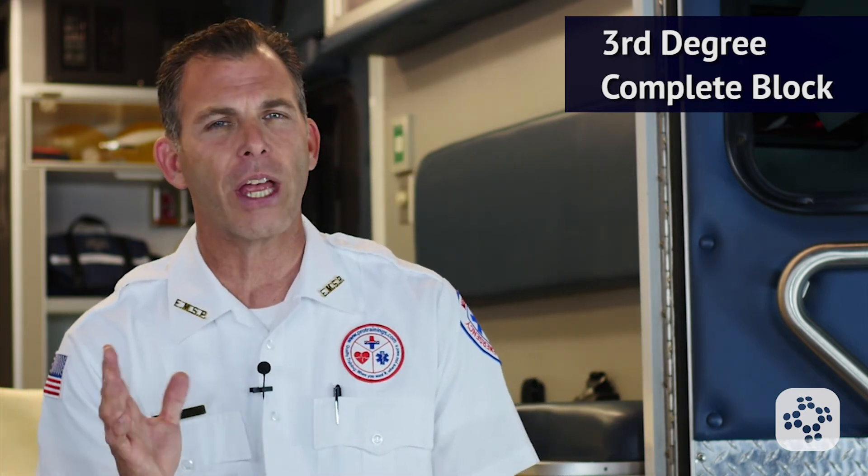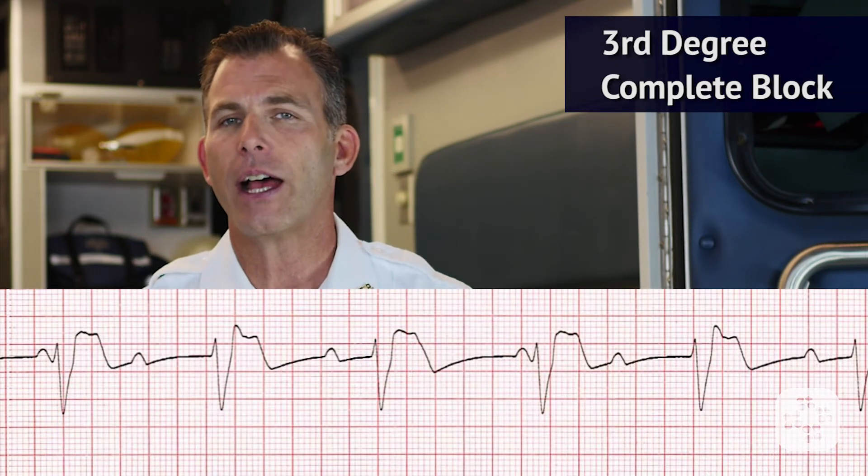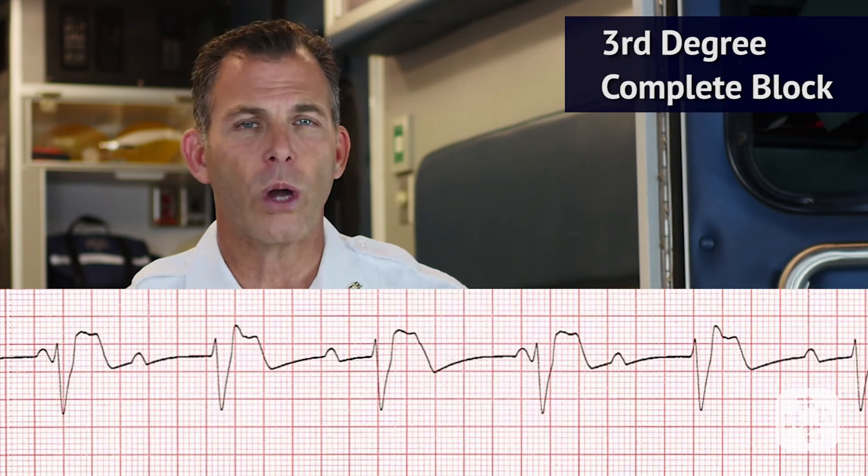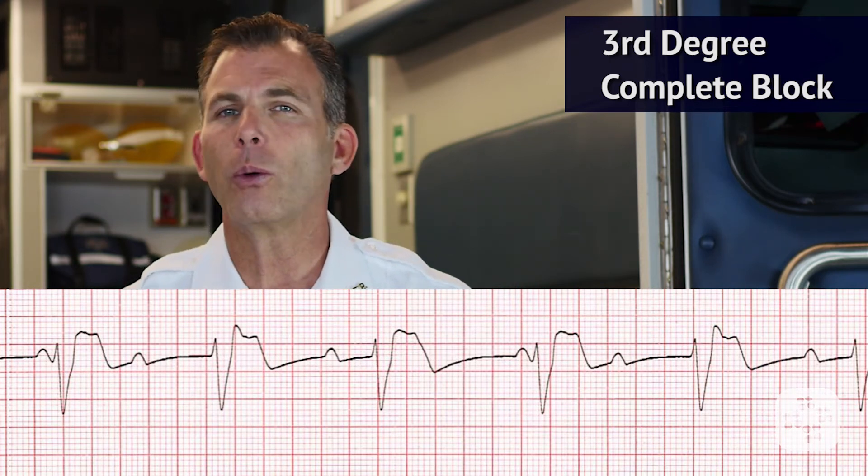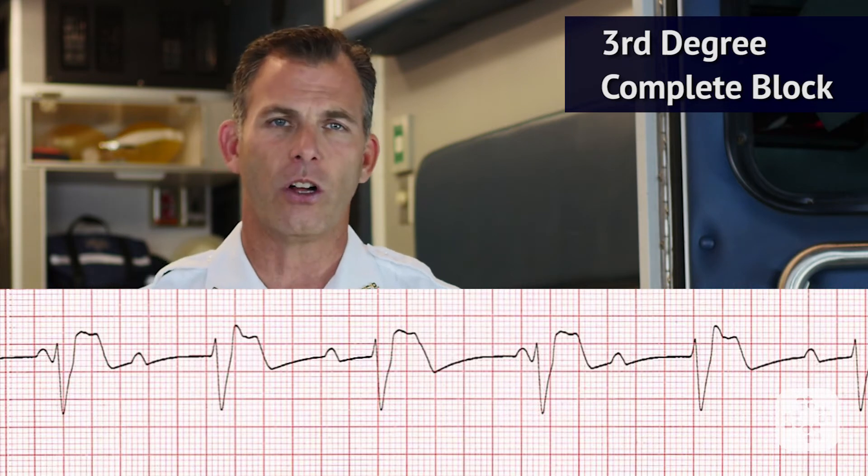And now lastly, the grand daddy of all AV blocks — the 3rd degree complete AV heart block. This happens when electrical conduction is completely blocked between the atria and the ventricles. The exact location of the block can vary, but it's usually somewhere around the AV node or lower, dissociating the SA pacemaker from the AV or bundle of His pacemakers, thereby creating an ECG that has regular P waves and regular QRS waves, but at different rates, completely disassociated altogether.